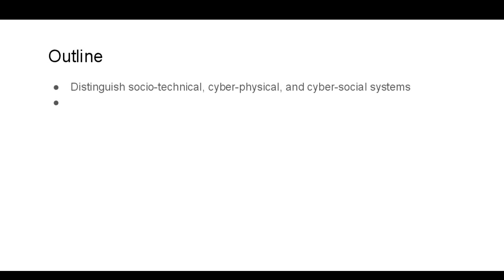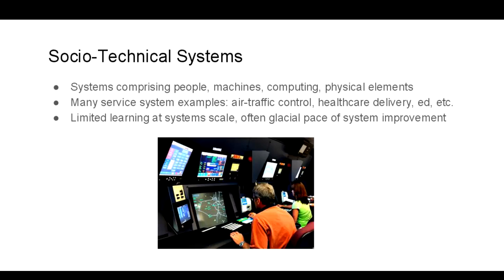The outline of this talk is as follows. First, I'm going to try to distinguish socio-technical, cyber physical, and cyber social systems to give you a framing for that latter term. Next, I'll talk about some of the key elements of cyber social systems. And finally, I'll go through some of the emerging ideas that have come out of this series of workshops, contributed by participants.